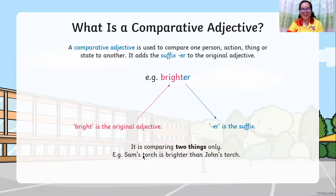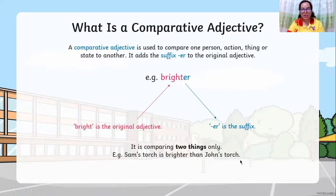Comparative is comparing two things. For example: 'Sam's torch is brighter than John's torch.' You are comparing two persons and their two objects.